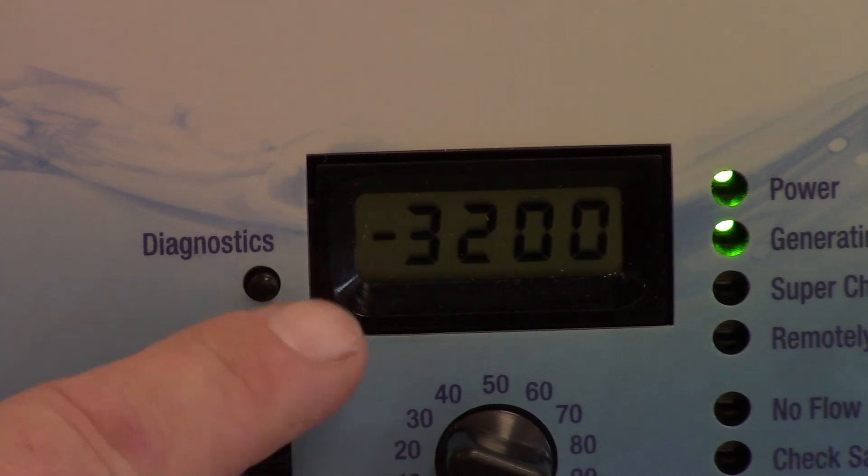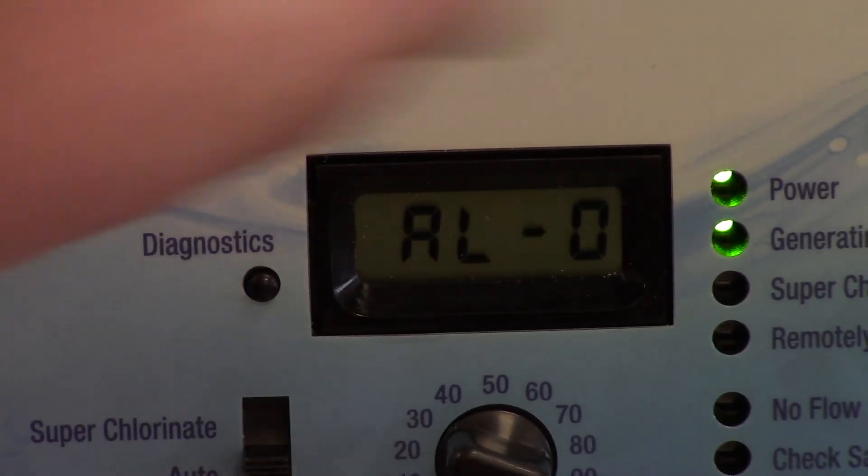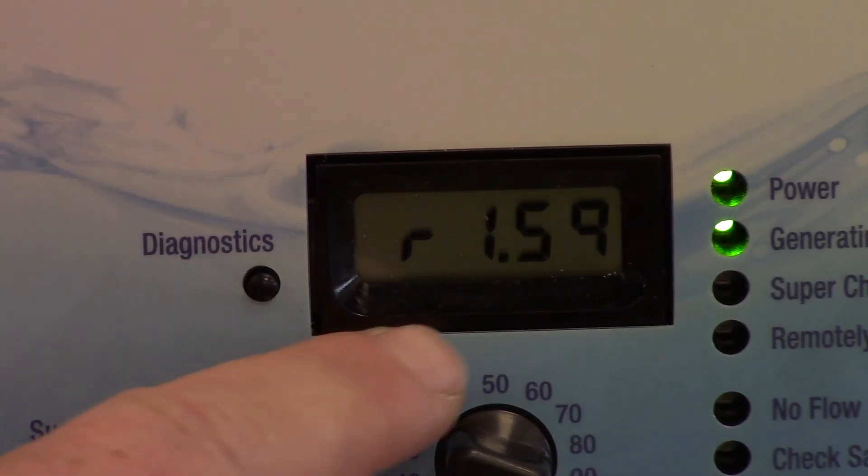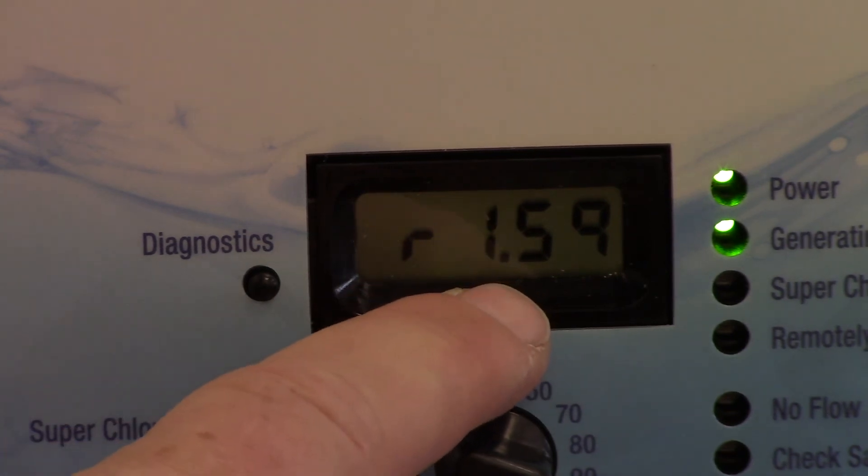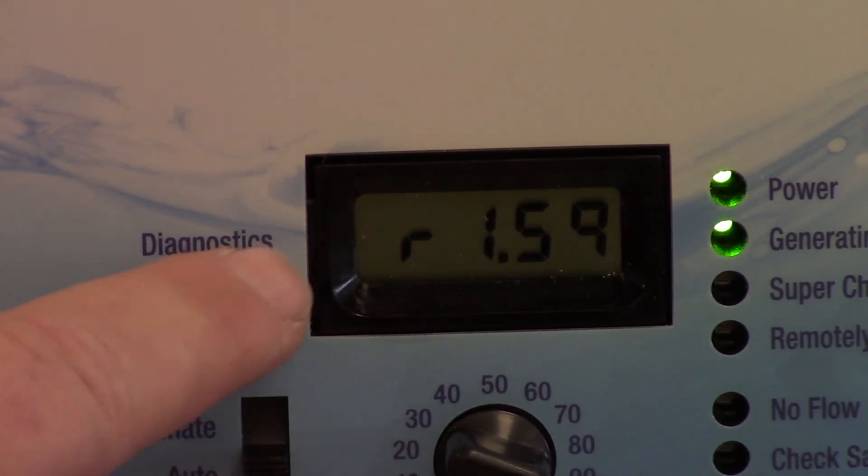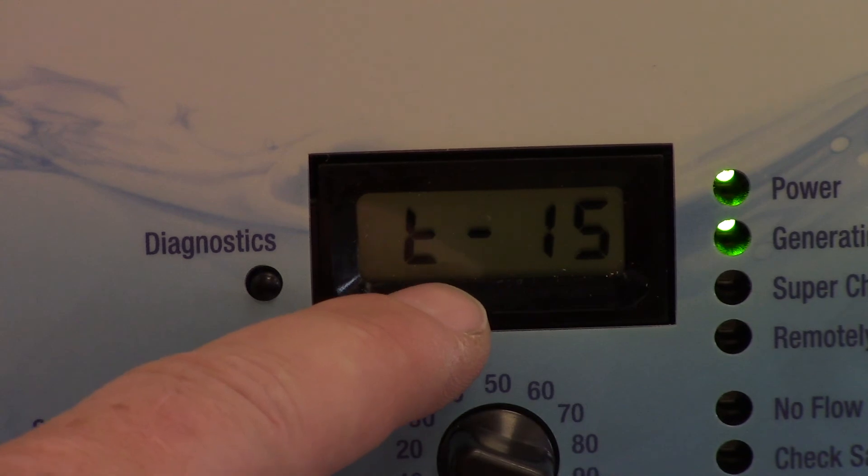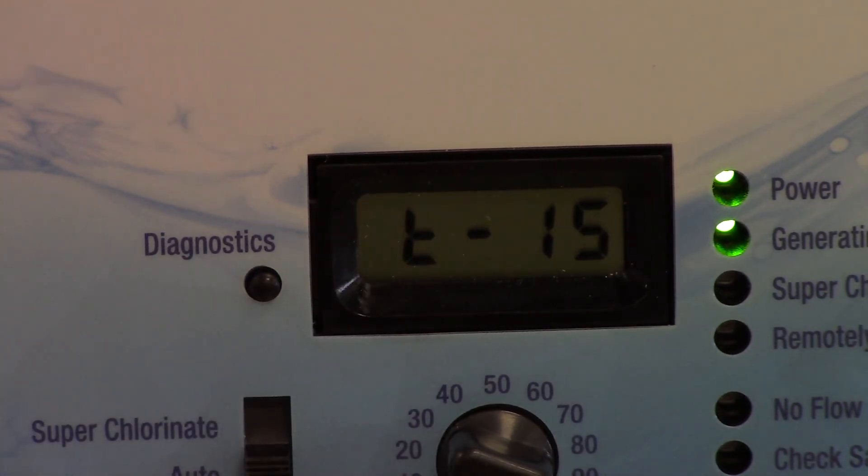Then we go back over here. AL0 is the type of box this is. R1.59 is the software revision so that we know how current our system is. T15 that is the size of our turbo cell that we have hooked on this system.